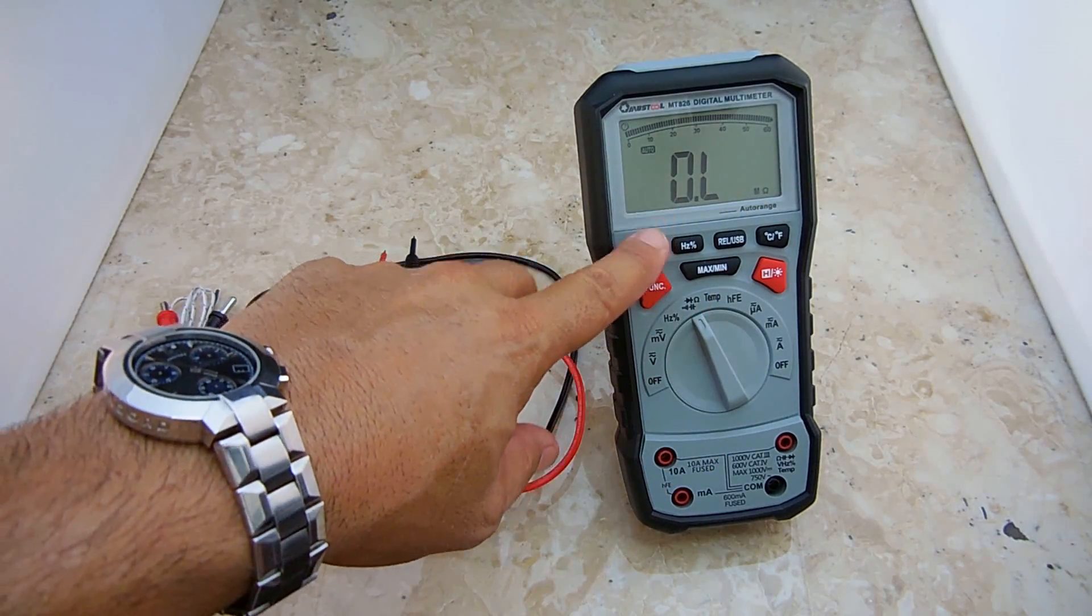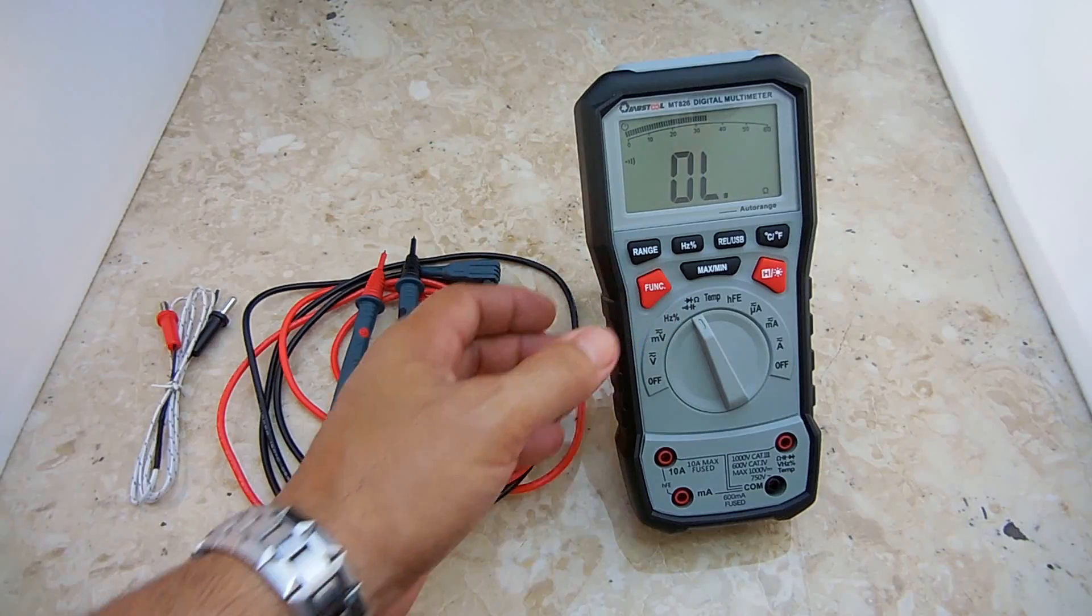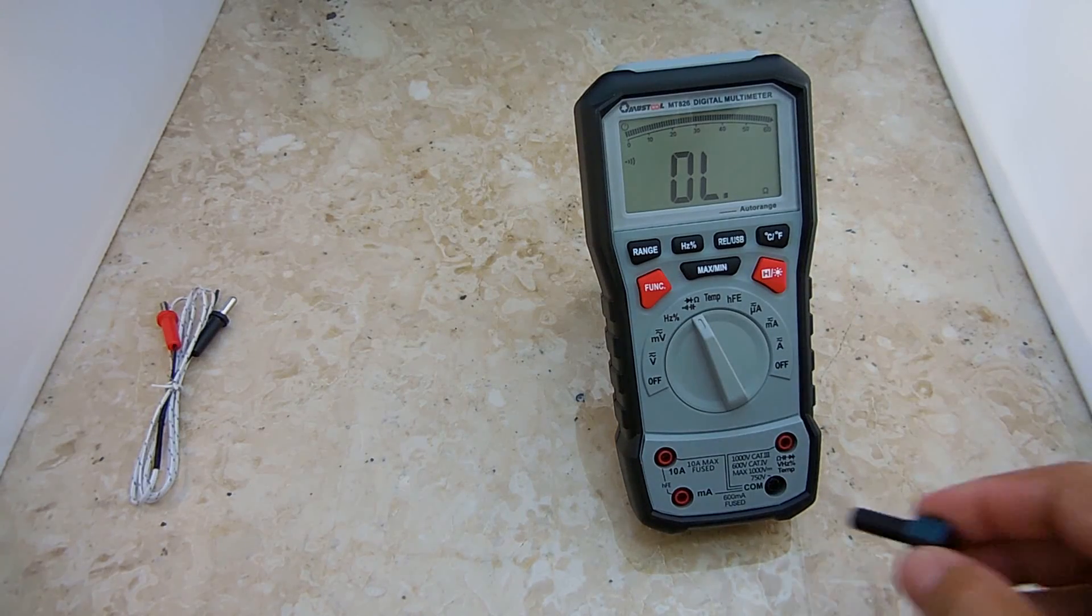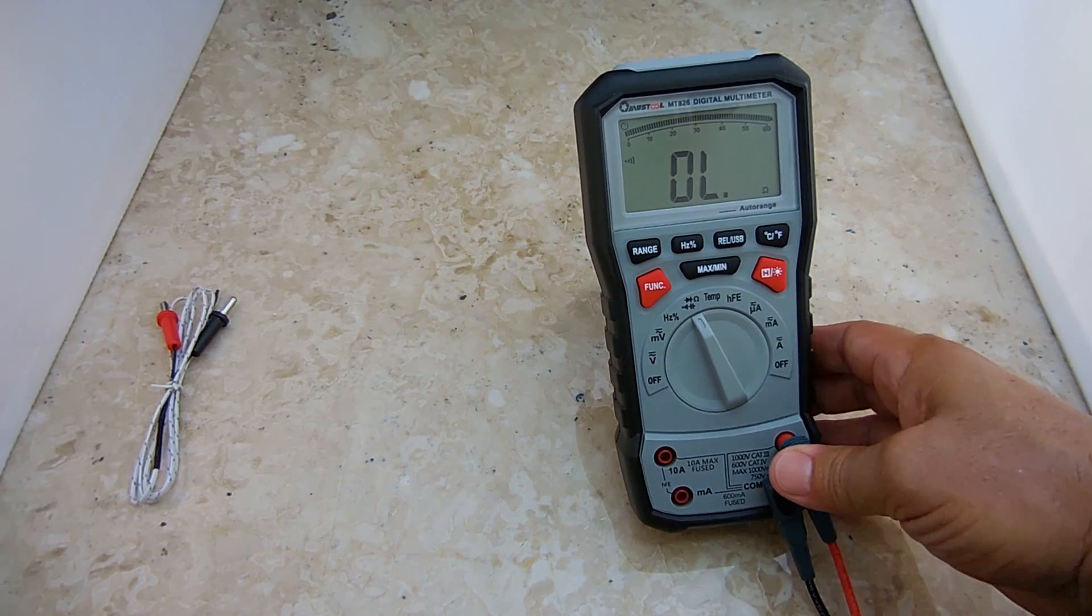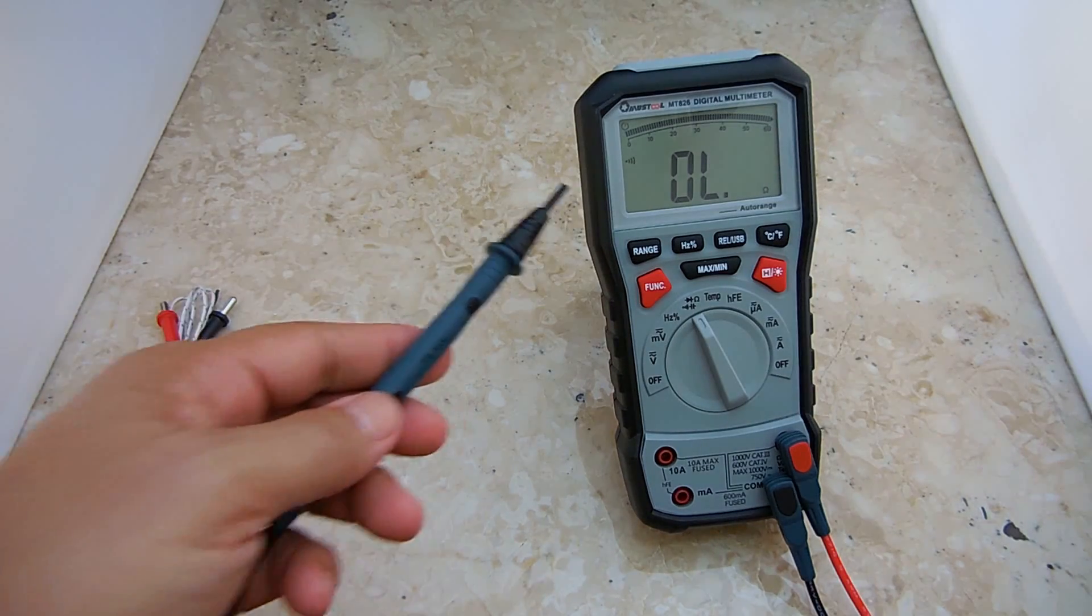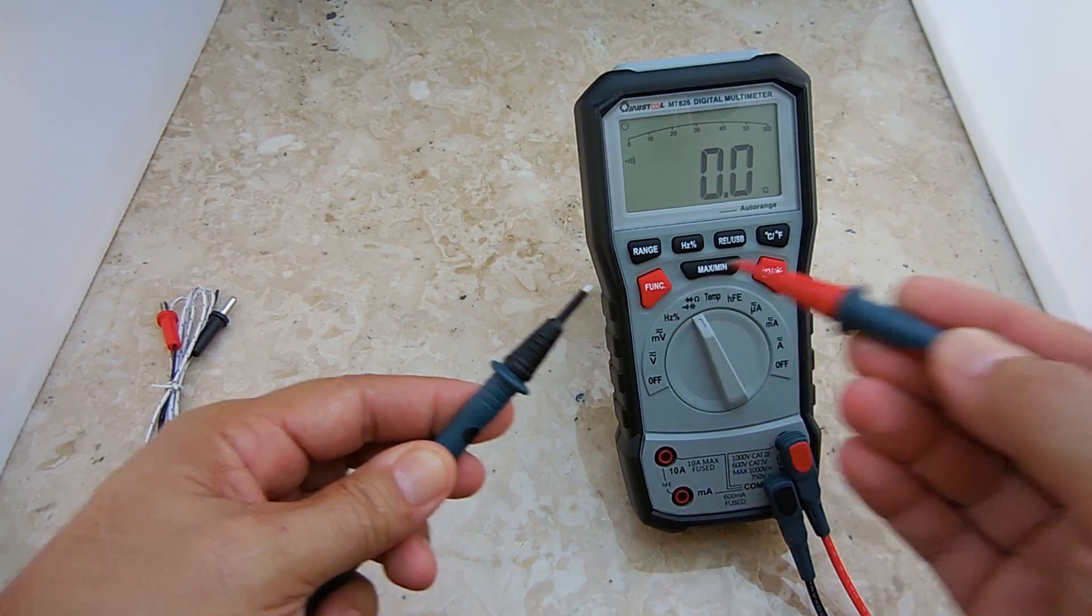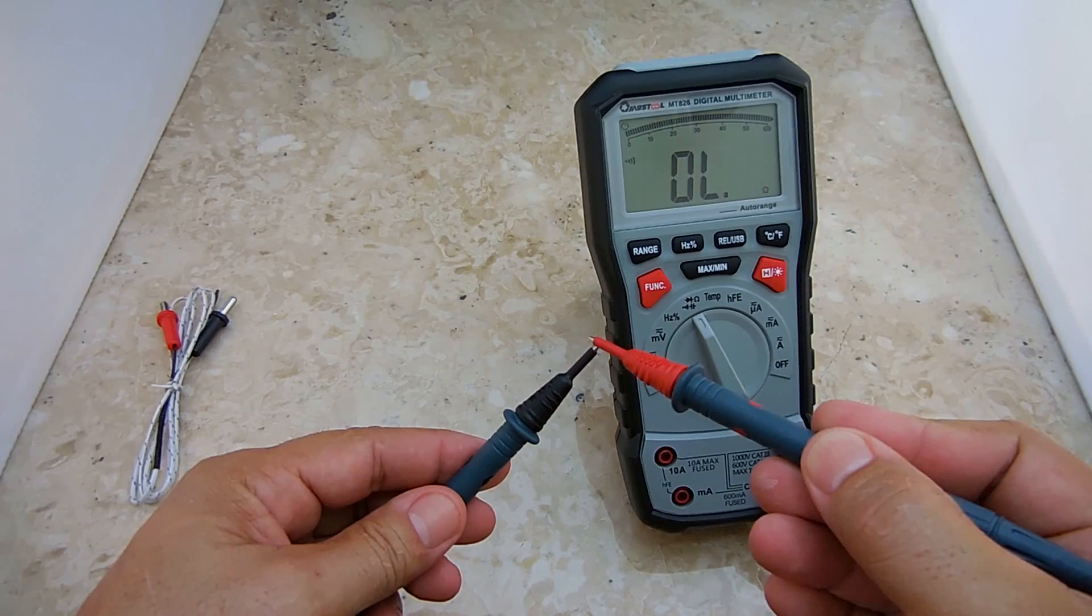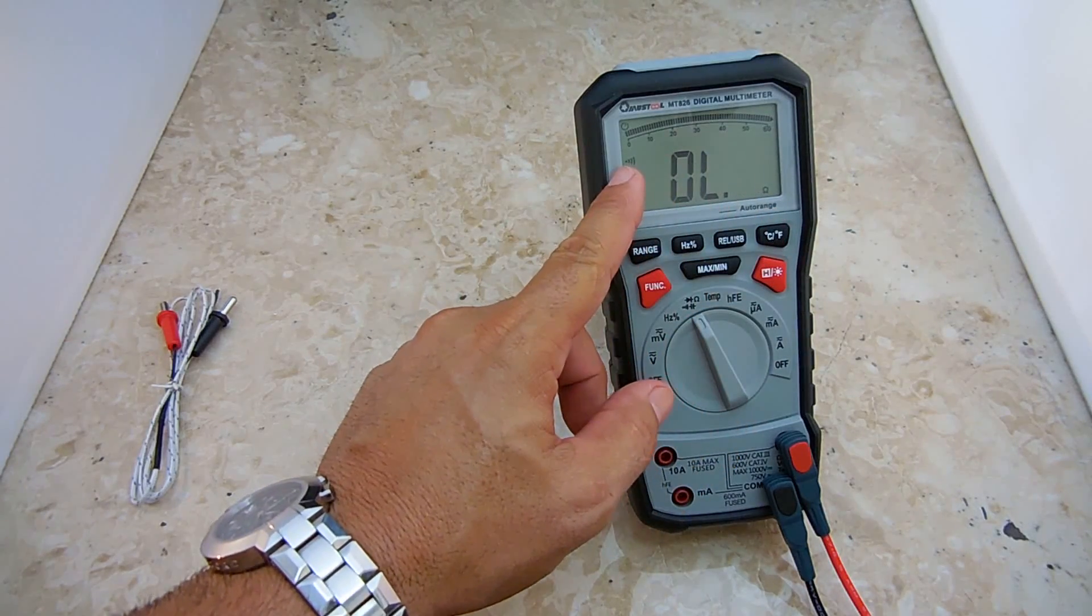On the 60 megaohm setting, it's 10k ohm. Push this button right here, function. Now you're on ohms with the alarm. When you touch the probes together, you're going to hear the alarm. As you can see, when you first touch, there's like a half of a second to a second delay before the action is detected.